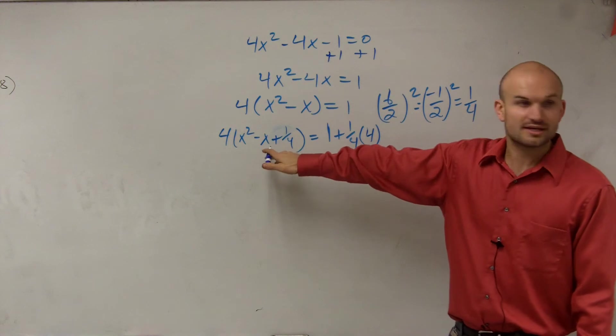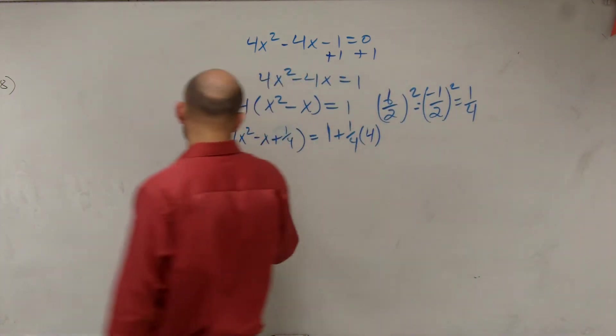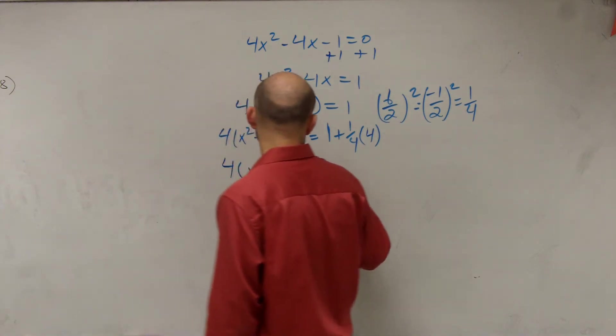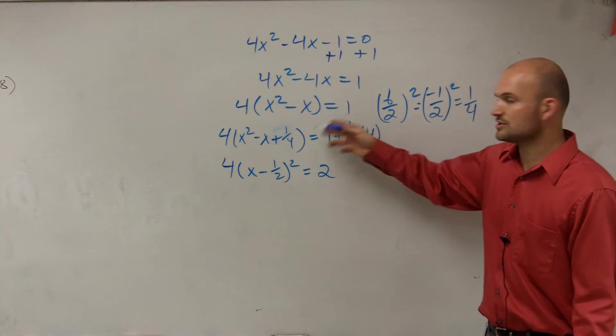Now I factor this. Since it's a perfect square trinomial, I know I can factor it to a binomial squared, which is 4(x minus 1 half)² equals 2. Because 1 fourth times 4 is 1. 1 plus 1 is 2.